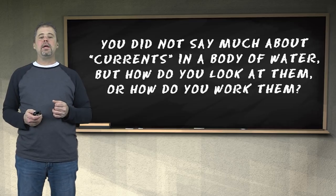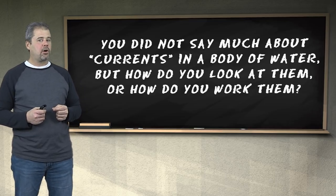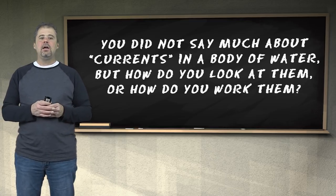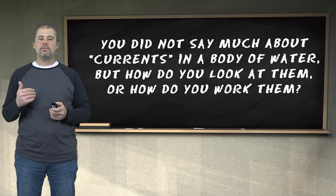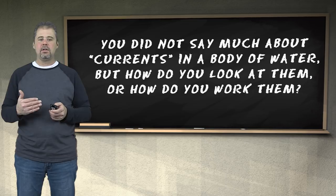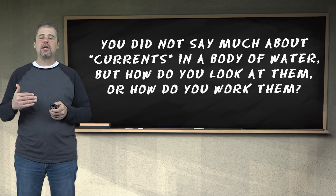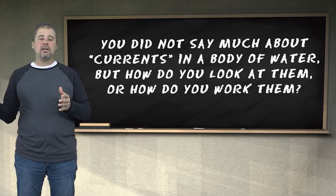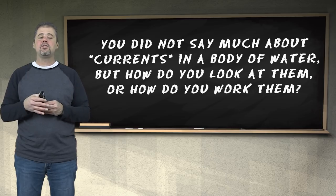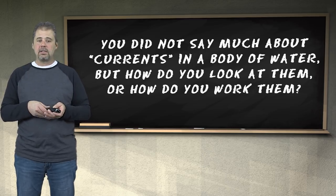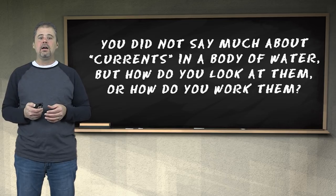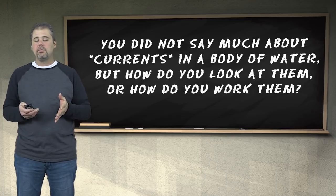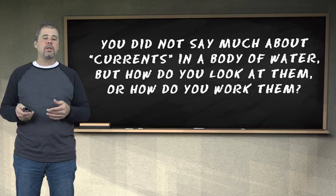Question: you don't say much about currents in a body of water — how do you look at them? A current is pretty much the same as a break line — it's a change. Depending on a current, you're not necessarily having a change in depth, but you have a change — it's like a current break line. We treat it just like a break line. It's something that the fish can relate to. We work a current break line pretty much just like a regular break line, but that current break line has got to be on structure for it to be productive.